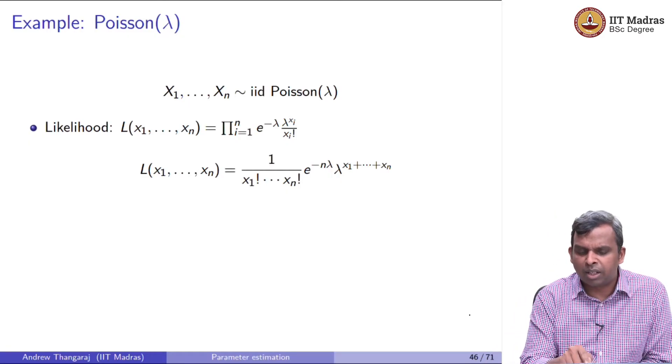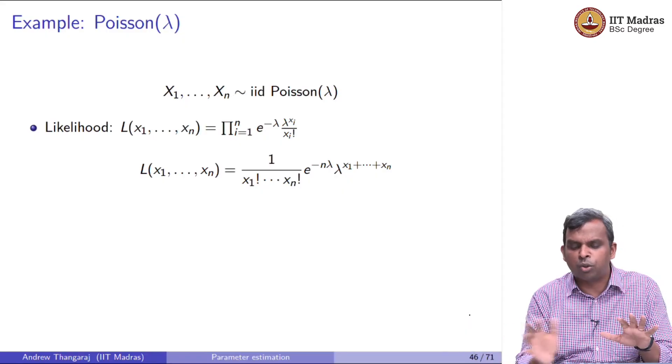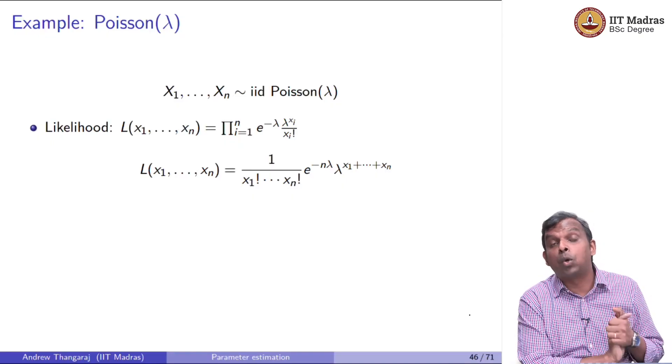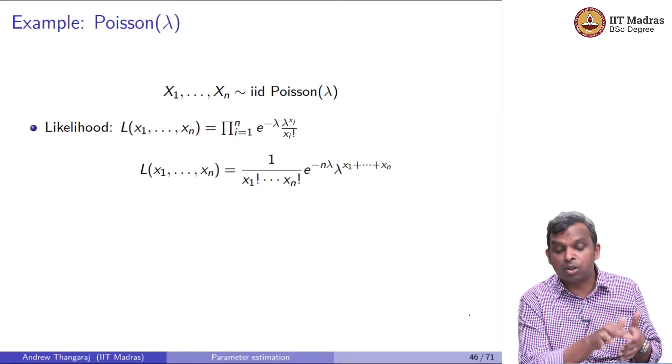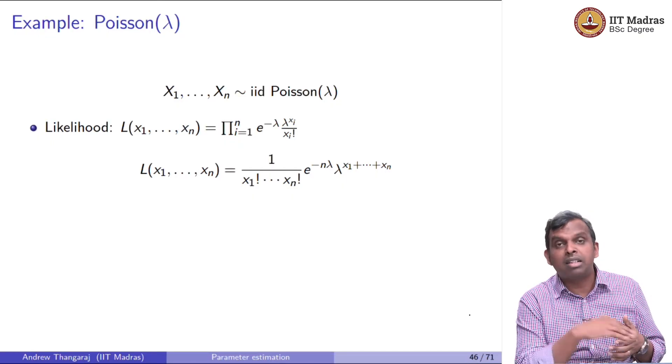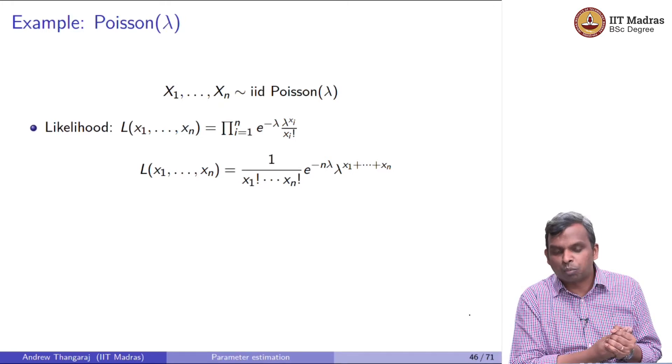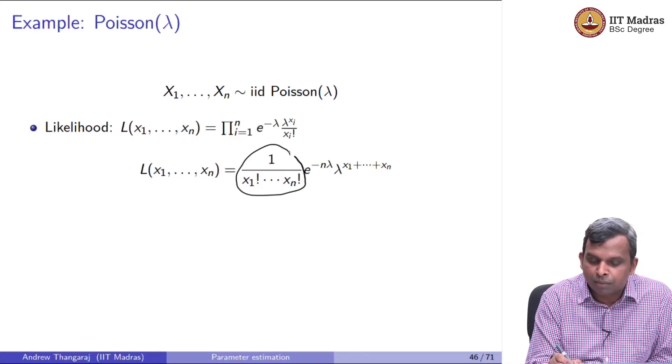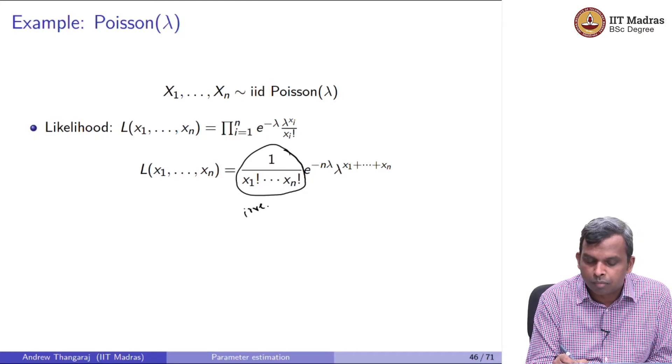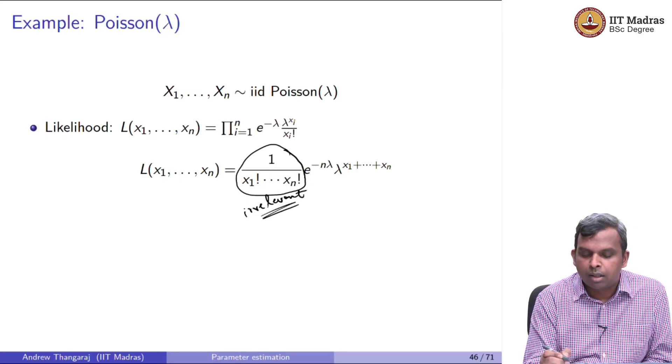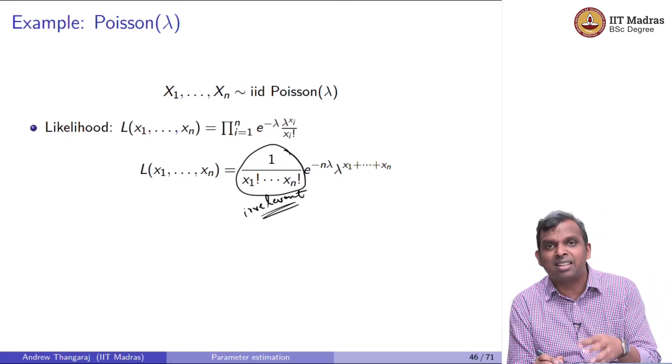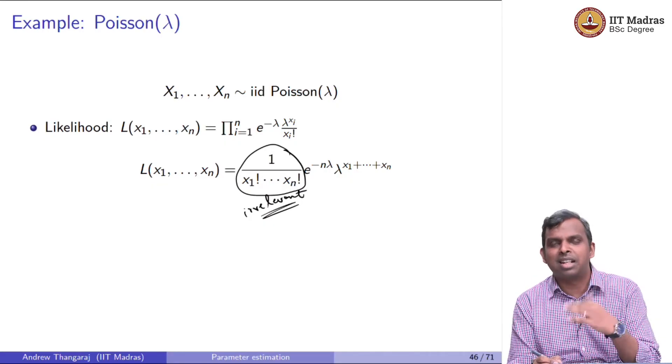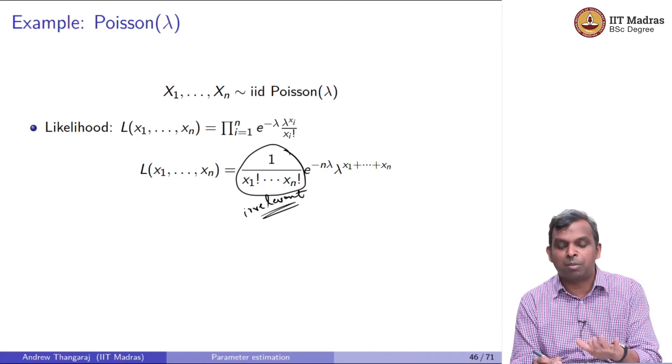You will have each of these terms. You see this 1 by x1 factorial, 1 by x2 factorial, collect all of those together and keep them on the left. Why am I doing that? Because they are not functions of my unknown parameter lambda. They depend on the sample, but whatever the value of lambda is, these things do not change. So this part is sort of irrelevant for me.